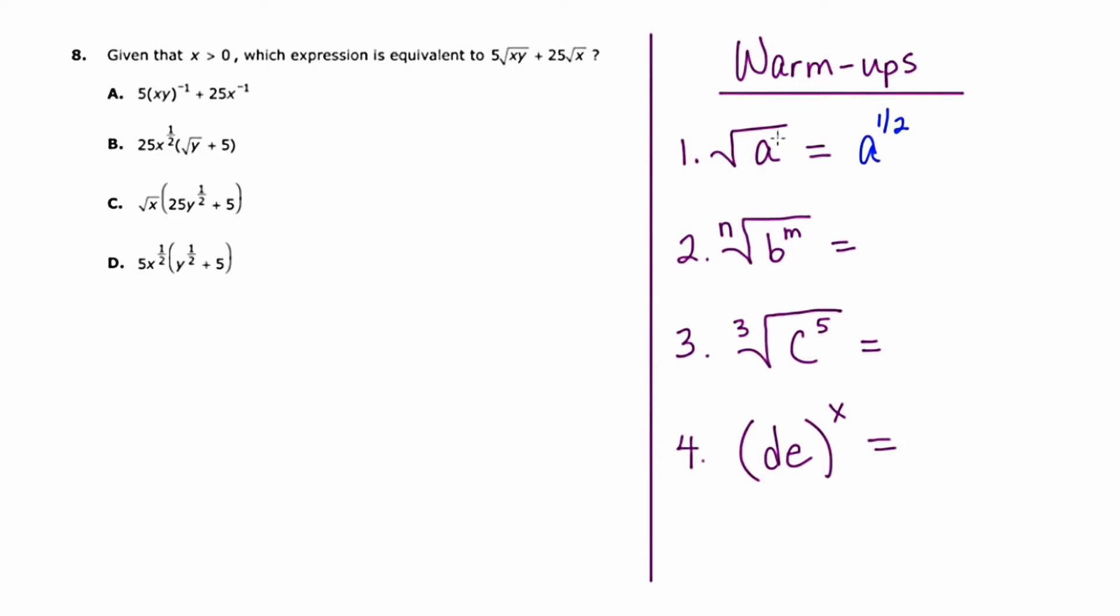Now, the reason it's one half is the power of a here is one. And when you take a square root, there's an implied two here. So it's really this number over that number. Now, having said that, the nth root of b to the m would be b to what power? If you guessed m over n, then you're correct.